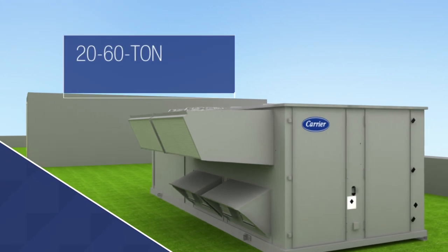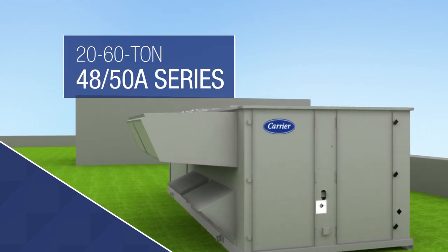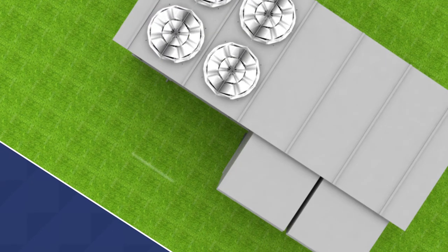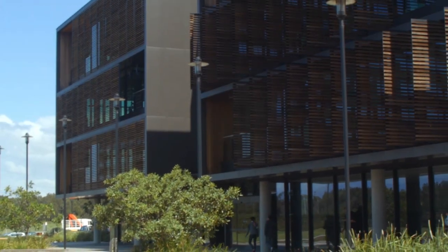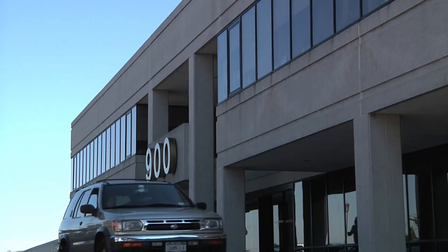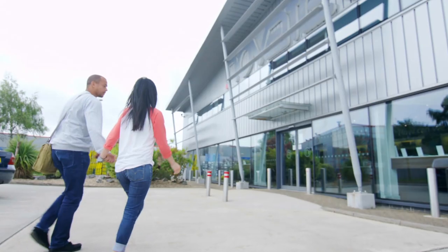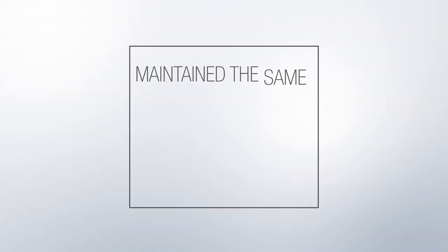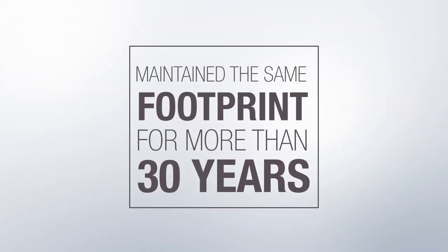More specifically, the WeatherMaker 20 to 60 ton series of applied rooftops is a prime example of how Carrier innovation can be put to work to efficiently improve comfort and air quality in all types of buildings. And while the WeatherMaker has actually maintained the same footprint for more than 30 years,